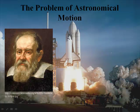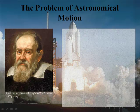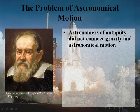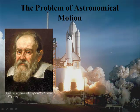When we talk about gravity, we've got to start with a guy by the name of Galileo. We talked about him in chapter one, but today we want to talk a little bit more about what Galileo said. He was one of the astronomers of antiquity, but he did not connect gravity and astronomical motion — he did not actually make that connection that there was such a thing as gravity. However, he did some experiments.